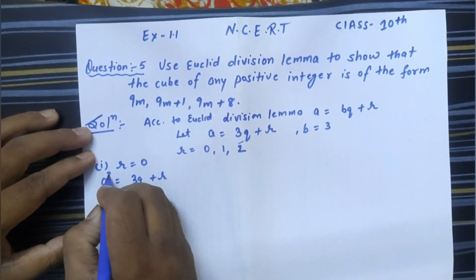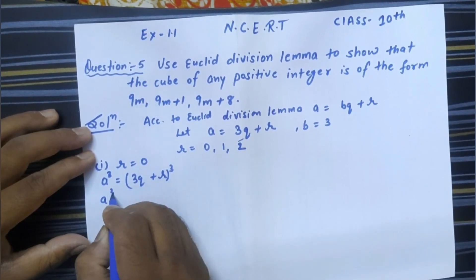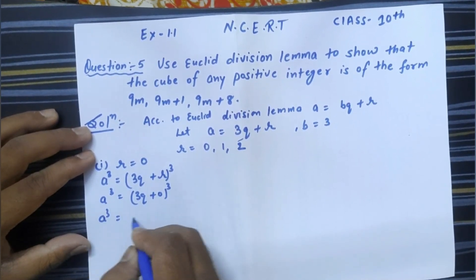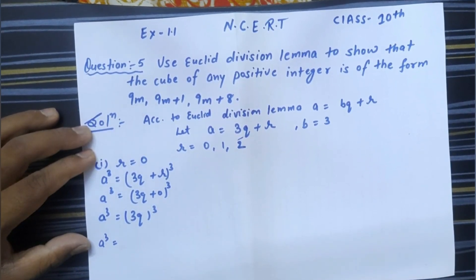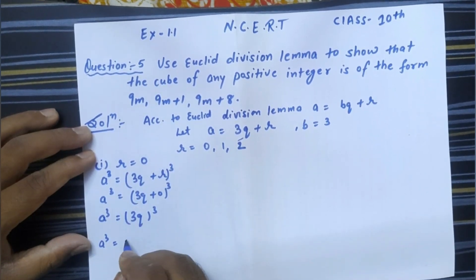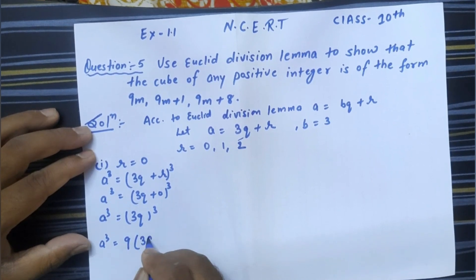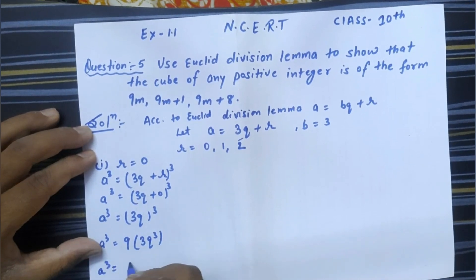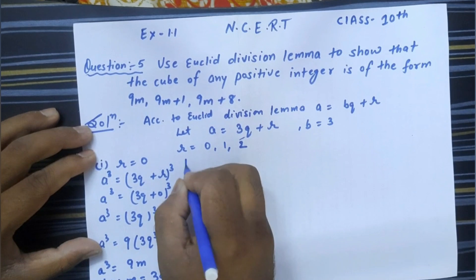In this case, a = 3q + r, and if we cube it, a³ = (3q + r)³. Since r = 0, a³ = (3q)³ = 27q³. Now we need the form 9m, so taking 9 common: since 27 = 9×3, we get a³ = 9(3q³). Therefore, a³ = 9m, where m = 3q³.